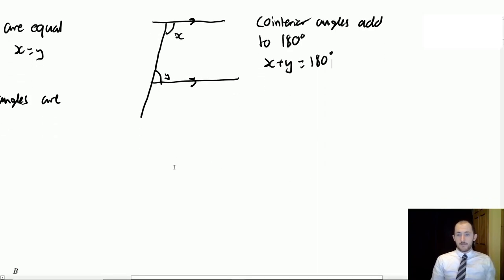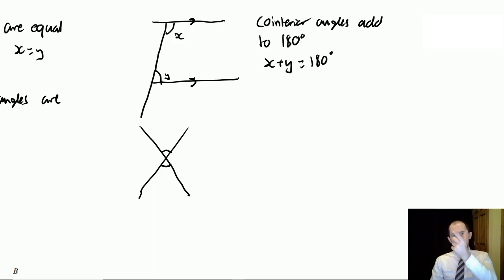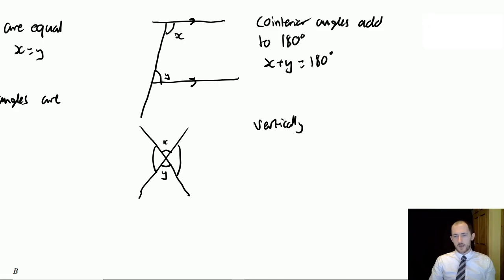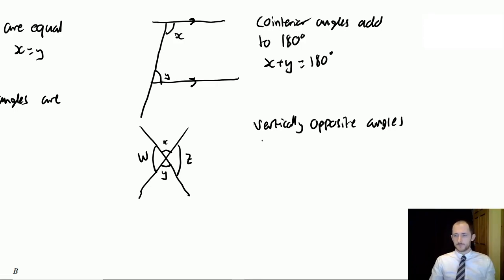You also have vertically opposite angles. If you have two lines crossing, the angles on opposite sides made from the same two lines are equal. So x equals y and w equals z. The name can be a bit misleading because they're not always vertical — it can also be the left and right ones that are equal.